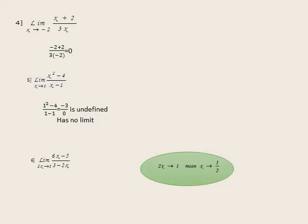Another example: limit as 2x approaches 1 of (6x minus 5) over (3 minus 2x). If 2x approaches 1, dividing both sides by 2 gives x approaches one-half. By substituting: 6 times one-half minus 5 over 3 minus 2 times 0.5. The result equals negative 1.